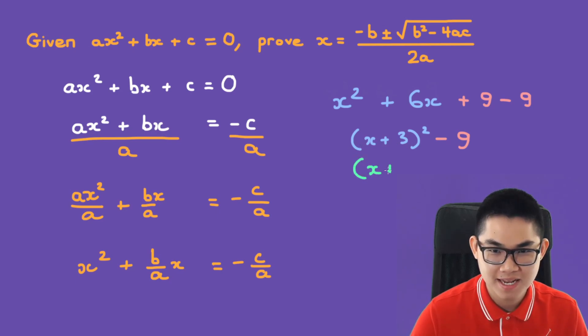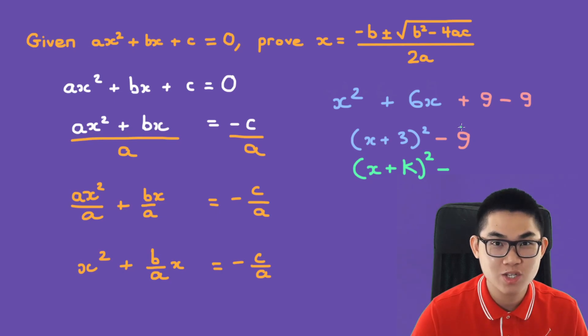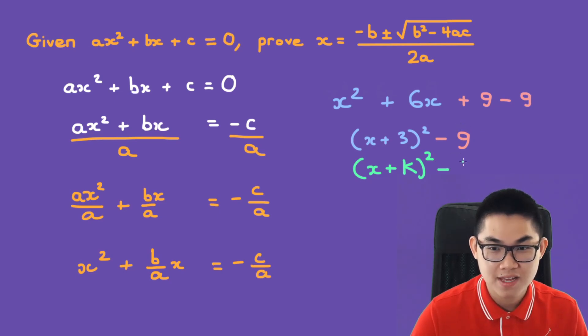So we have x plus k to the power of 2 minus k squared. Notice that 3 becomes 9, and 9 is 3 to the power of 2, so in general we have k to the power of 2.